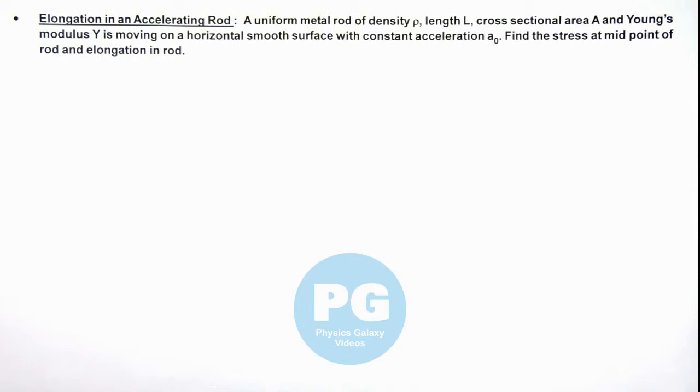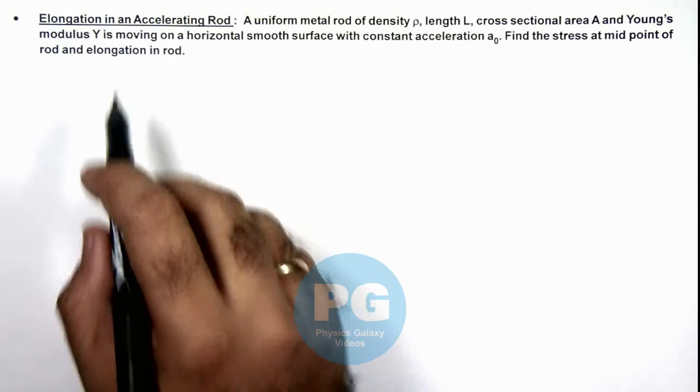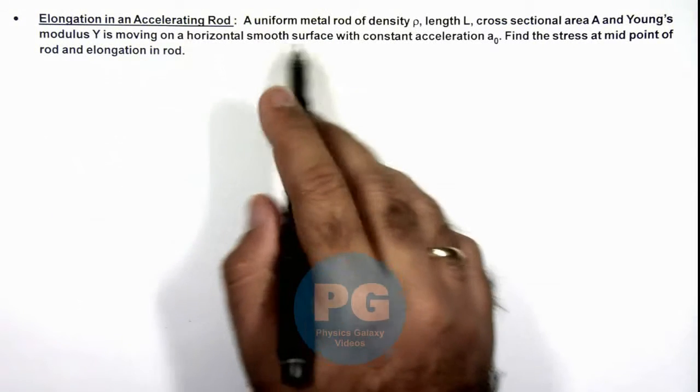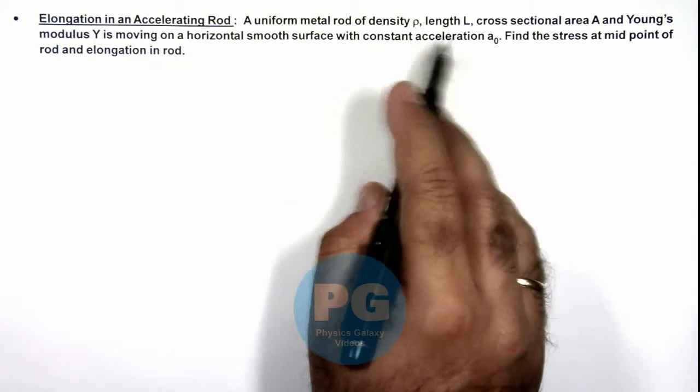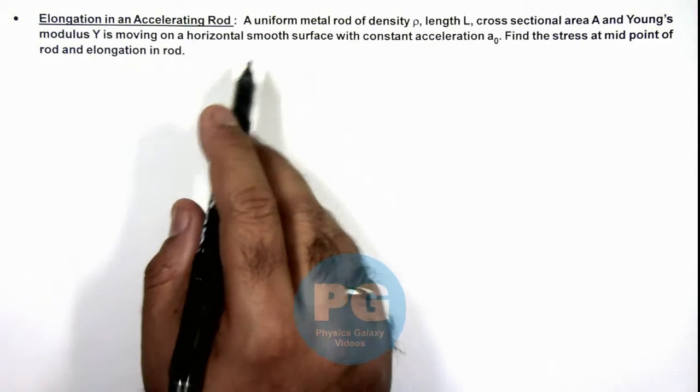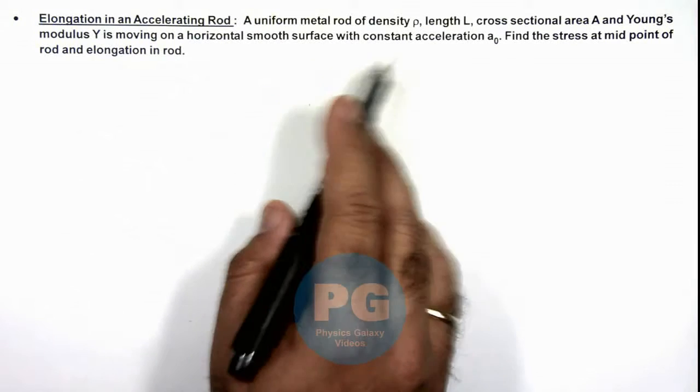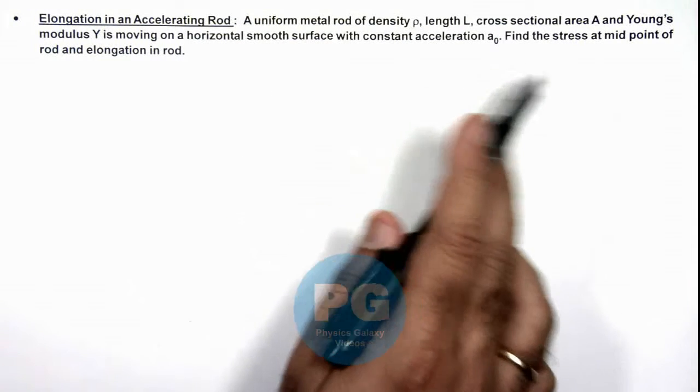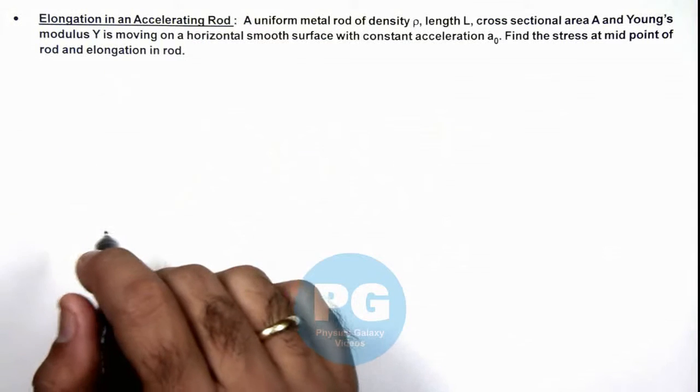In this illustration we'll analyze the elongation of an accelerating rod. We are given that a uniform metal rod of density ρ, length L, cross sectional area A, and Young's modulus Y is moving on a horizontal smooth surface with constant acceleration a₀. We are required to find the stress at mid point of the rod and elongation in it.